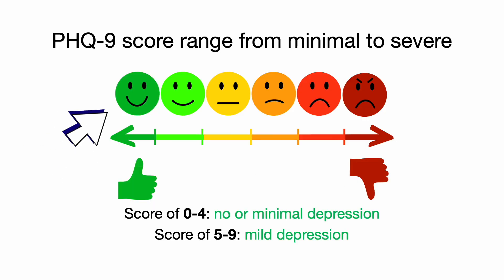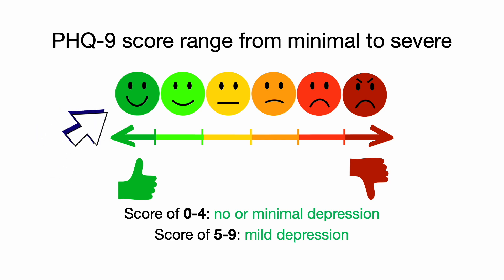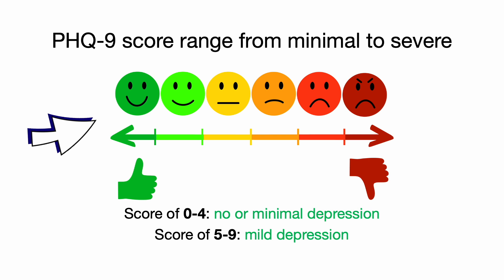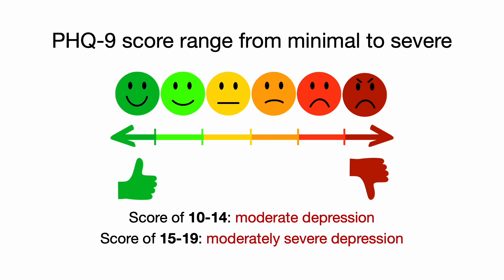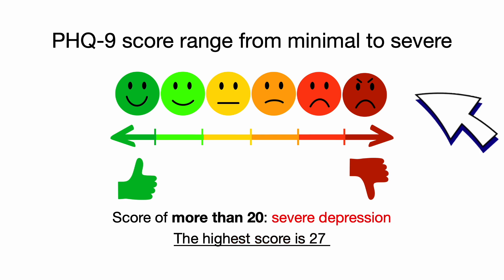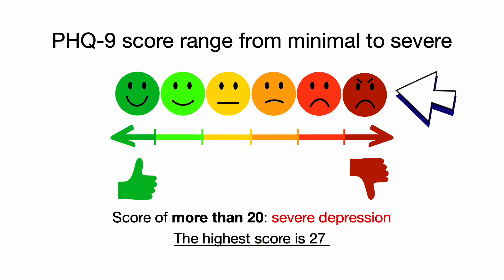The PHQ-9 score ranges from minimal to severe. A score of 0 to 4 indicates no or minimal depression. A score of 5 to 9 suggests mild depression. A score of 10 to 14 suggests moderate depression, whereas a score of 15 to 19 indicates moderately severe depression.